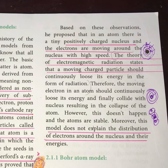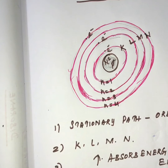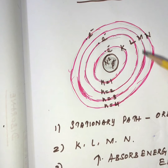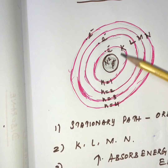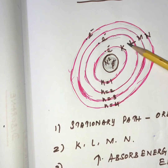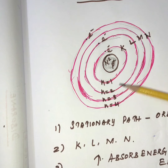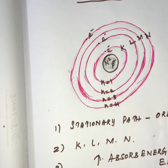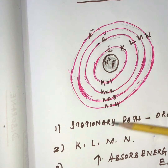Later, it was explained by the Bohr model of an atom. According to the Bohr model, the center part of the atom is called the nucleus, where it consists of positively charged protons and neutral neutrons. The electrons are circulating in a circular path, and the stationary path of an electron is called an orbit, also referred to as an energy level.